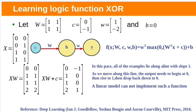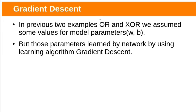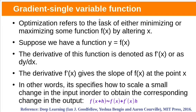In the previous class we have seen R and XR problems. While discussing them we assumed some fixed values for model parameters — for W we used this matrix, assuming these weight values and bias values. But in reality a gradient-based optimization algorithm will be used to find these model parameters. Today let us see how neural networks learn model parameters.